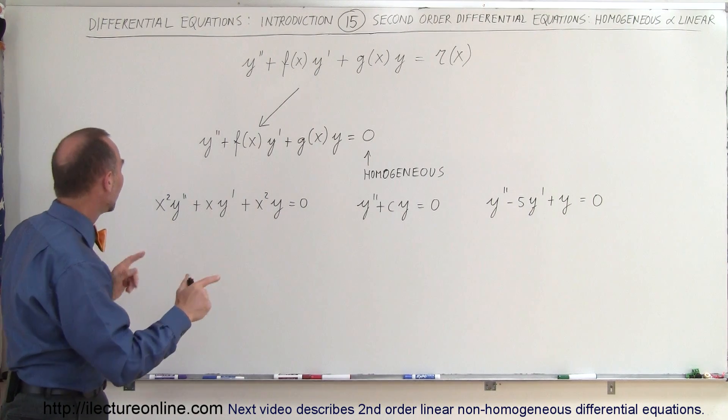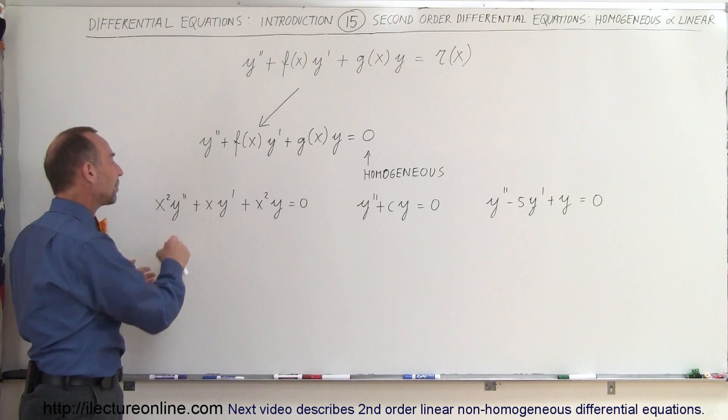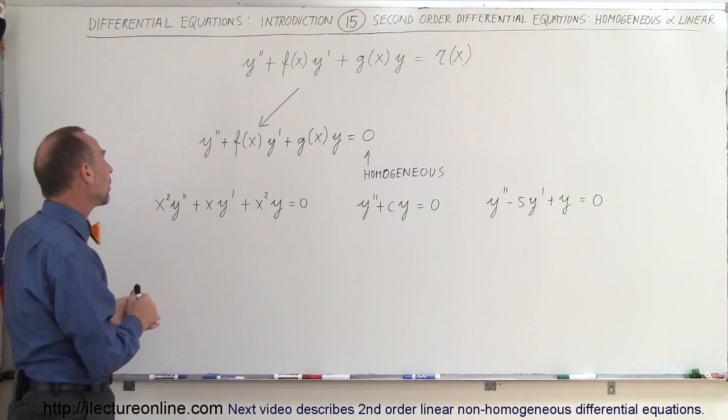So the first one here you say, well wait a minute, don't you have an x squared in front of y prime? Does that exclude it from being a linear equation?